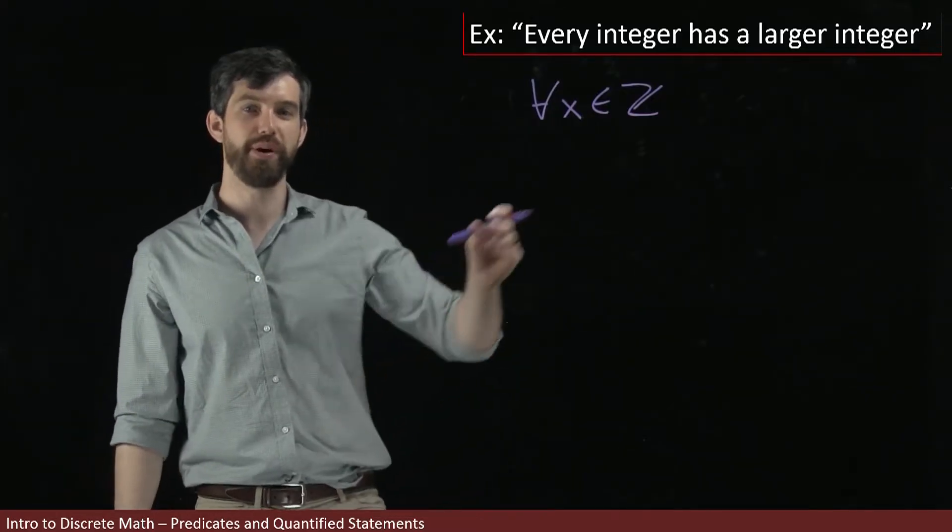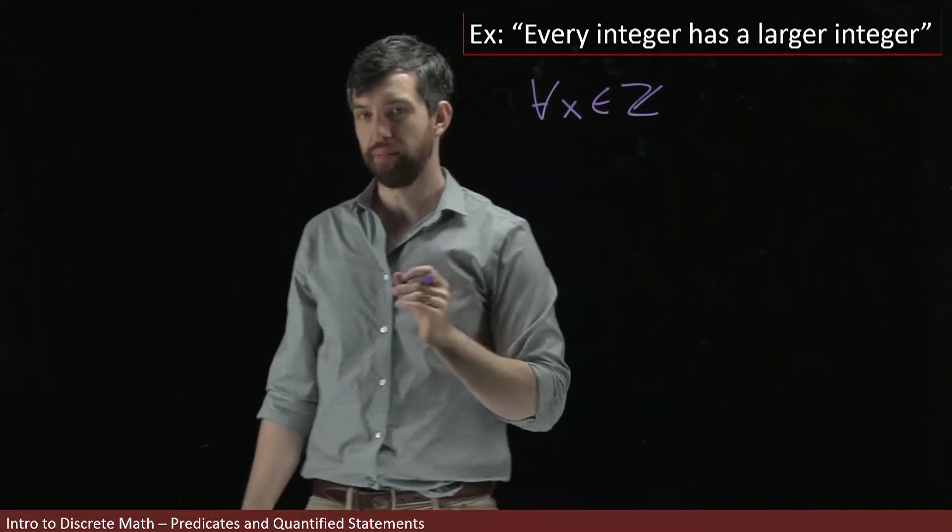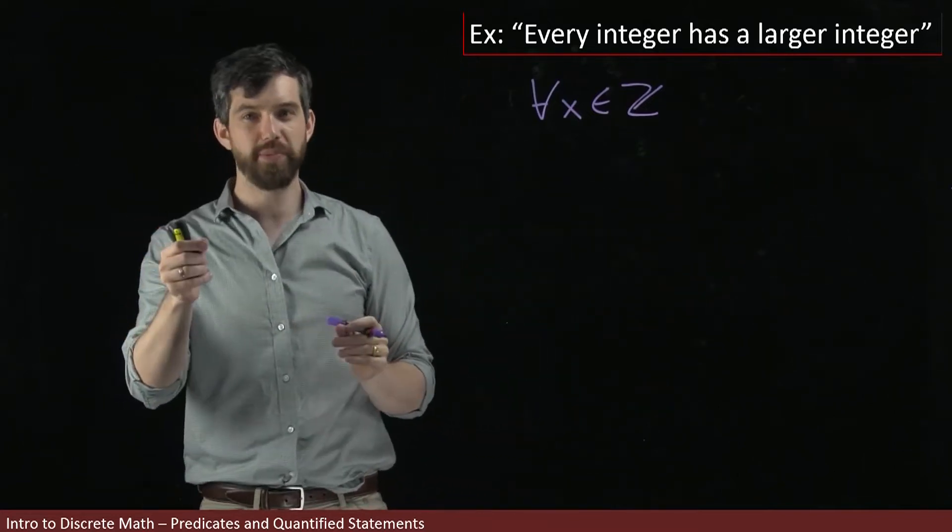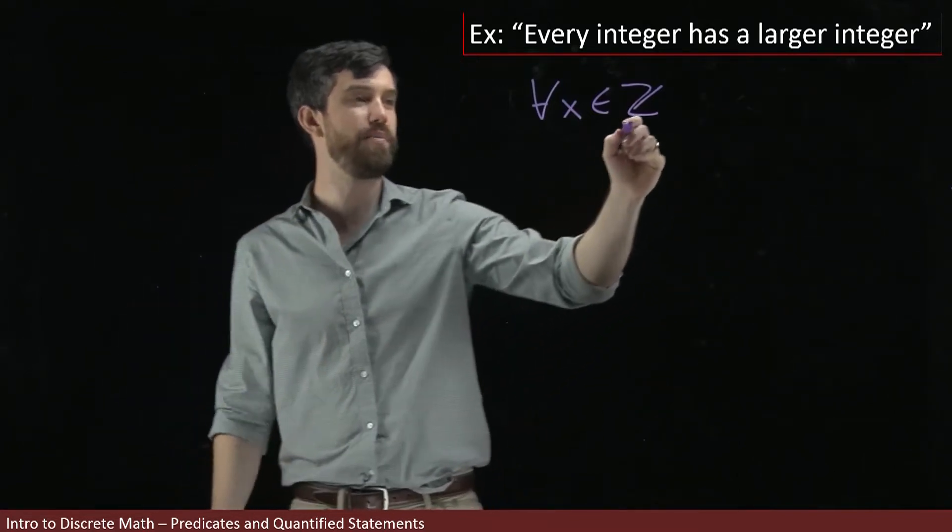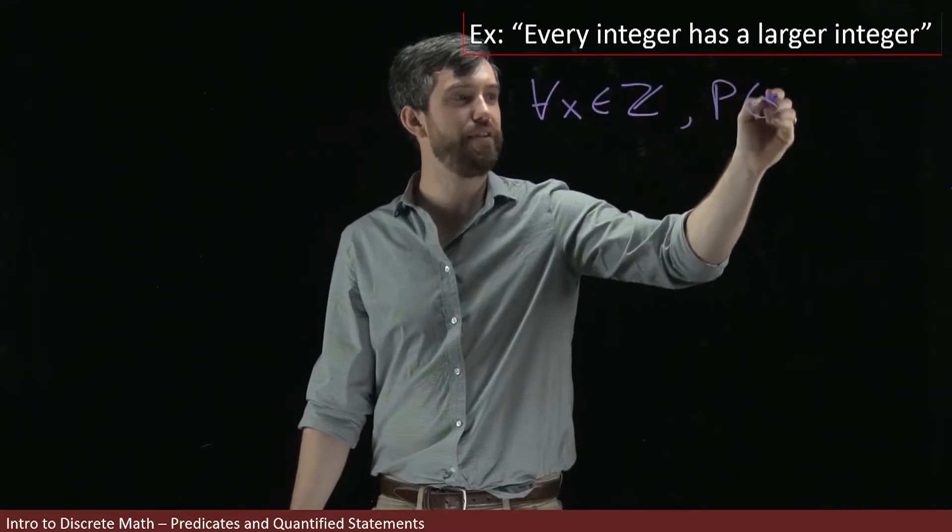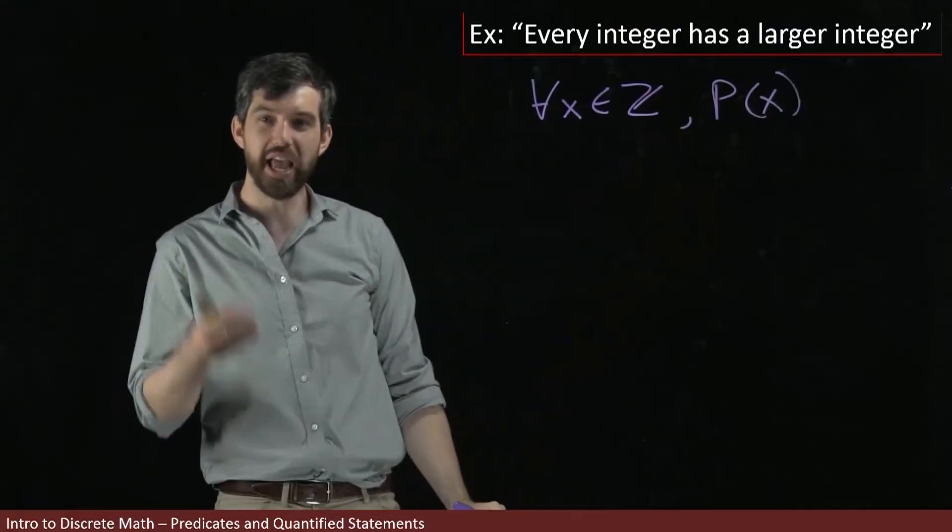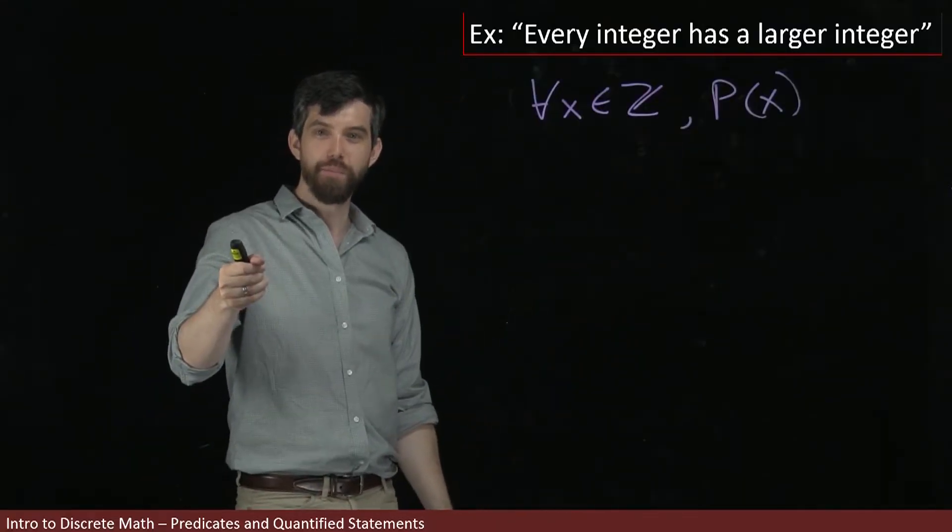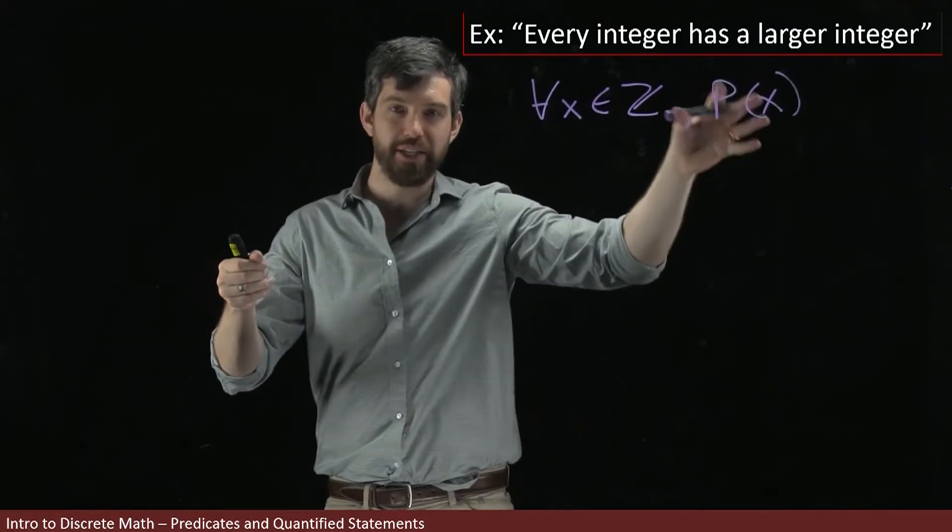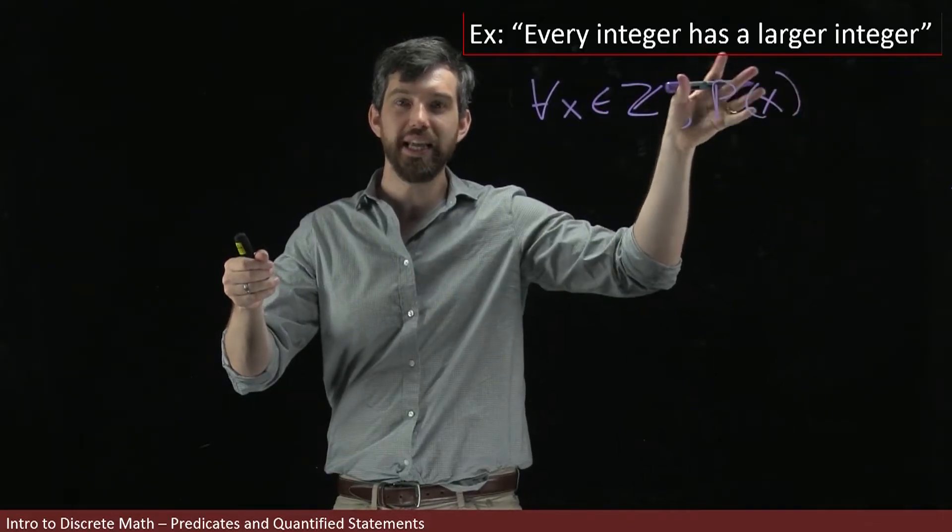But then we've got this property has a larger integer. And there's a couple of different possibilities. One possibility might be that I just say that for all of x, p of x, where p of x is this whole property, has a larger integer. But I'm actually going to break up this p of x and try to analyze its structure.